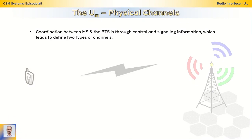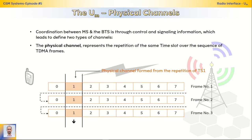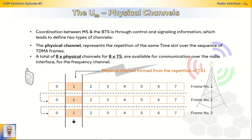The UM physical channels. The coordination between the mobile station and the BTS can be done through control and signaling information, and this in turn leads to defining two types of channels. The physical channel represents the repetition of the same time slot over TDMA frames, so we have 8 physical channels. The first physical channel represents the repetition of the first time slot over frame 1, frame 2, frame 3, and so on.